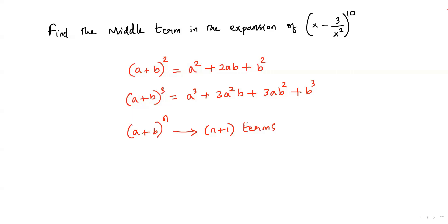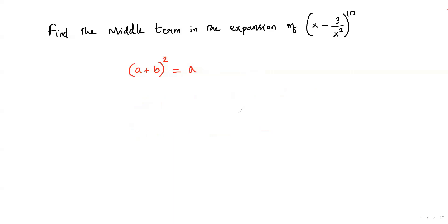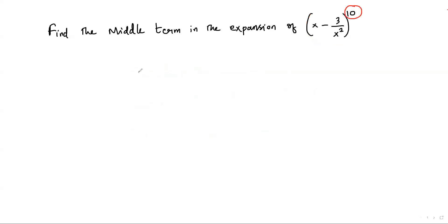We can apply the same logic to our problem. The binomial (x - 3/x²) has exponent 10, so the expansion will contain 11 terms.